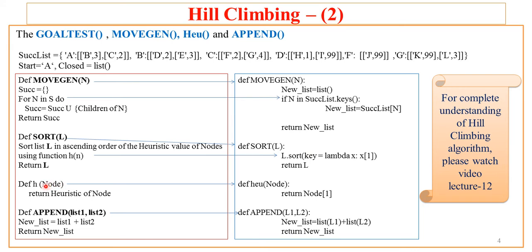Next is defining the heuristic function. This function takes a node and returns its heuristic value. In Python, the heu function returns node[1] — since each node is a list element where index 0 is the node name and index 1 is the heuristic value. For example, if the node is [B, 3], it returns 3. The Append function is very simple: it takes two lists, appends them, stores the result in a temporary new list, and returns that to the main algorithm.